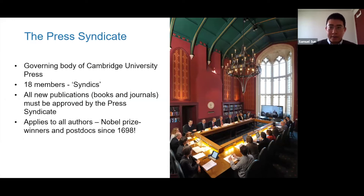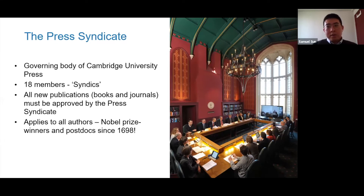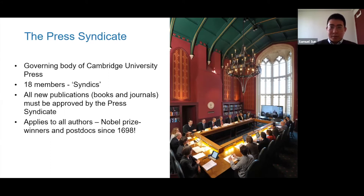The Press Syndicate consists of 18 members called syndicates. One is the Vice Chancellor of the University of Cambridge, one is a senior officer from the university, and the other 16 are professors from different schools of the university. All new publications, including books and journals, must be approved by this Press Syndicate — including works by Nobel Prize winners. We have had this mechanism since 1698.